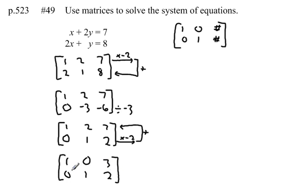So now that it's in reduced row echelon form, my two solutions for x and y are 3, 2. And I can check those by plugging them in here. 3 plus 2 times 2 is 4. Yes, that equals 7. 2 times 3 is 6, plus 2. Yes, that equals 8. So my solution for x and y is 3, 2.